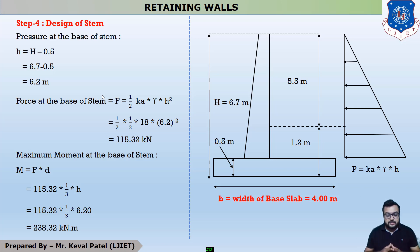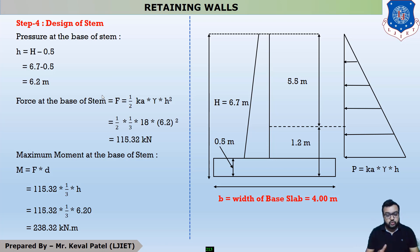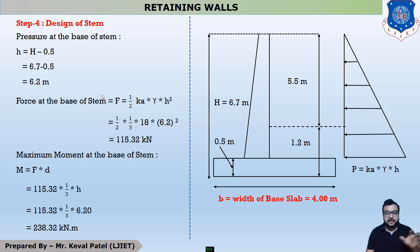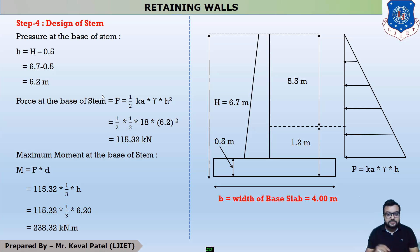After finding the preliminary dimensions, we had to perform four stability checks. The first check is stability against overturning. The second check is stability against sliding. The third check is that the maximum pressure at the toe end must not exceed the safe bearing capacity of soil. The last check is that the minimum pressure at the heel portion must always be greater than zero — meaning no tension at base level.